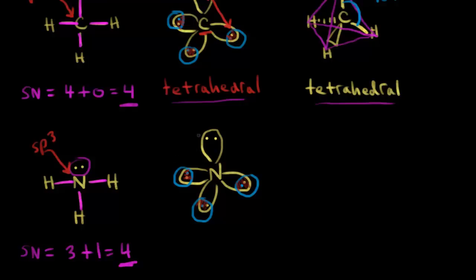We have this lone pair up here. The arrangement of these electron pairs is just what we talked about before — a tetrahedral arrangement of electron pairs, or electron groups. VSEPR theory tells us that's how they're going to repel.